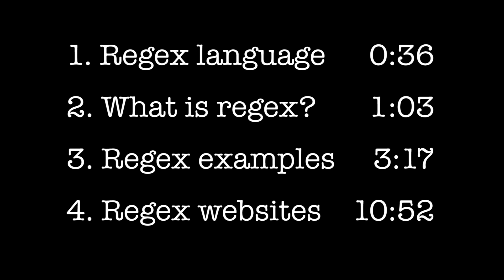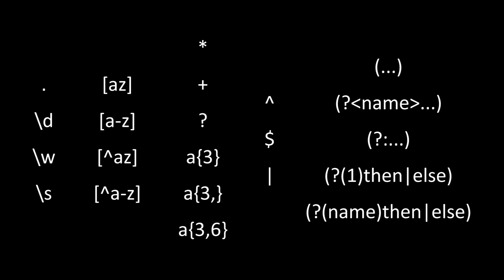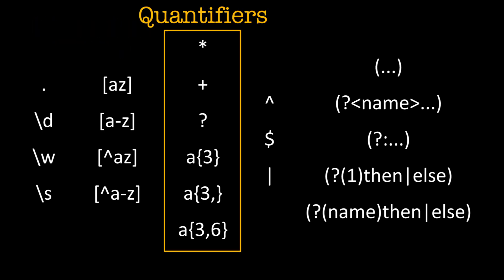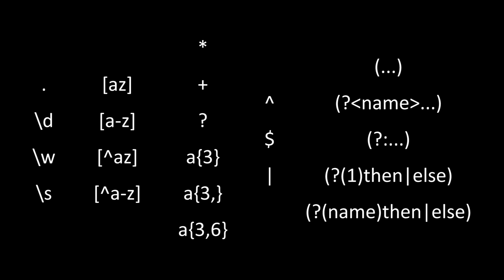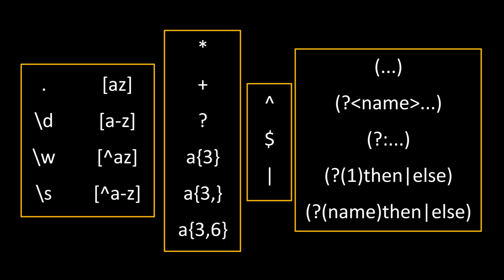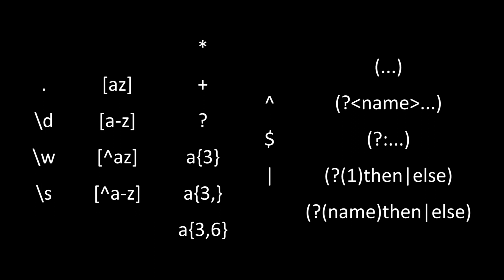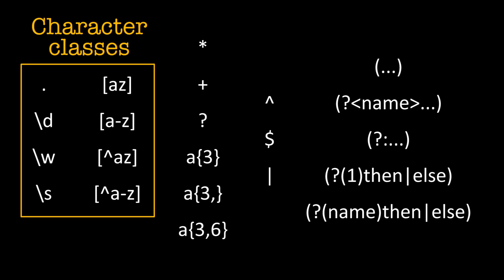Here's a basic outline of what we're going to cover in this video. Use one of the timestamps on screen if you want to skip to a specific section. Here's the list of things I plan to cover over the next few videos: character classes, quantifiers, anchors and alternation, and finally capture groups and conditionals using capture groups. Today we're just going to talk about character classes and how they're used in Regex.